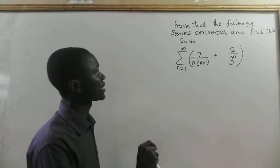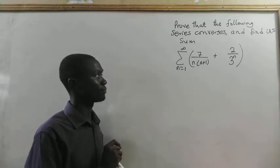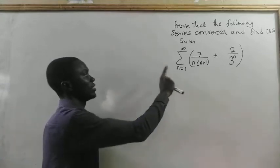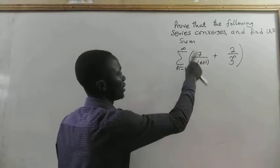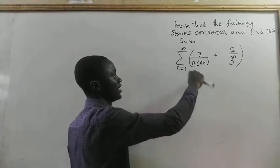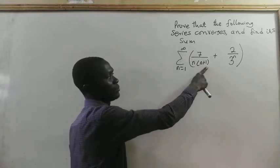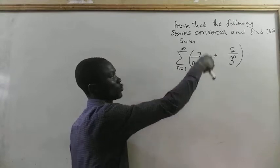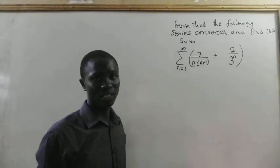Prove that the following series converges and find the sum: summation from n equal to 1 to infinity of 7 divided by n times (n plus 1), plus 2 divided by 3 to the exponent n.